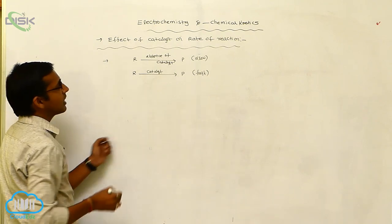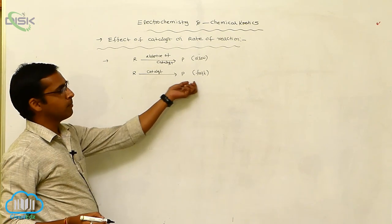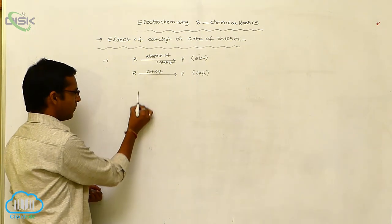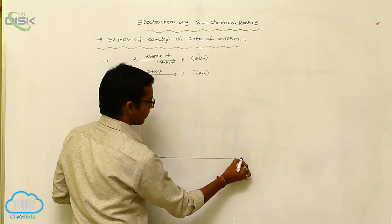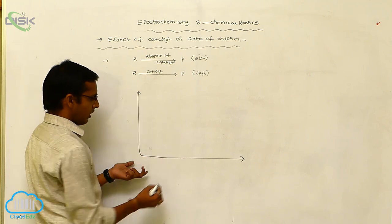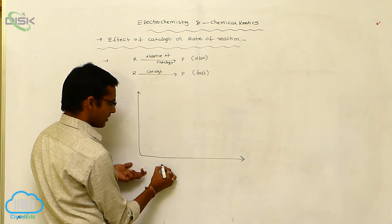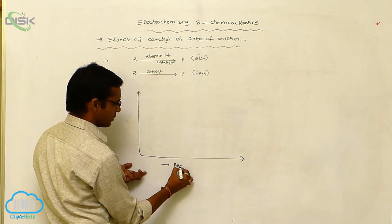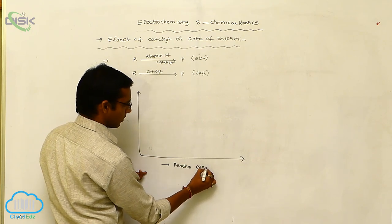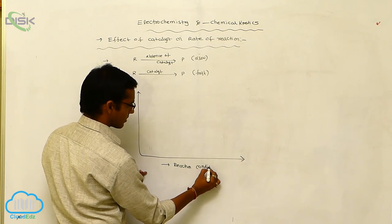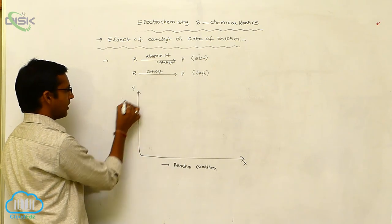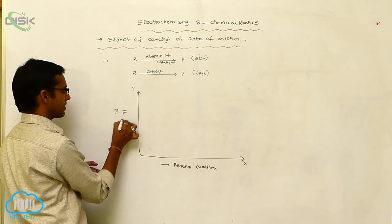Why does the rate of reaction increase in the presence of a catalyst? To understand this, consider a graph plotted with reaction coordinate on the x-axis and potential energy on the y-axis.